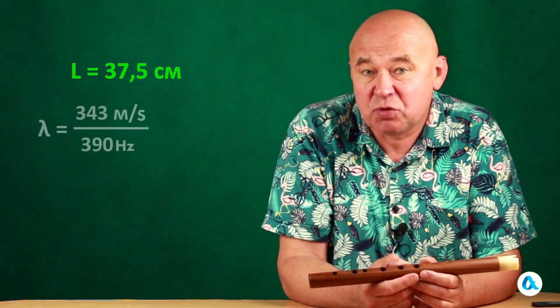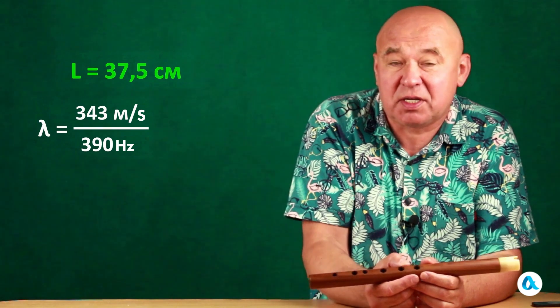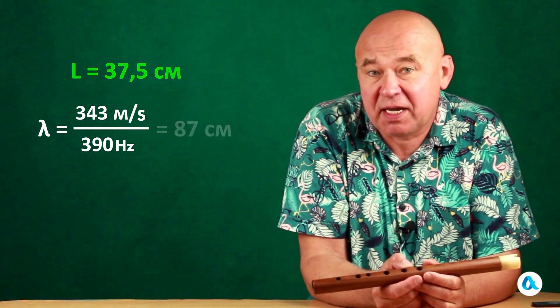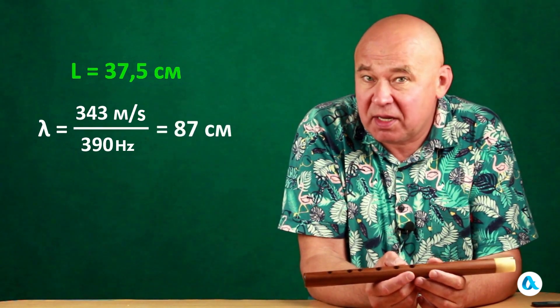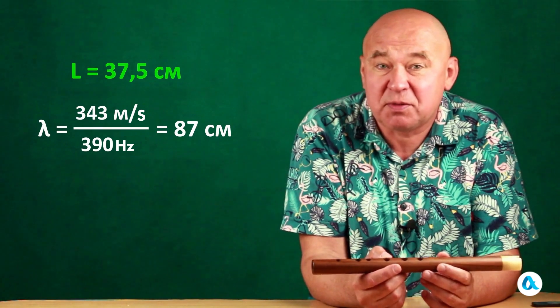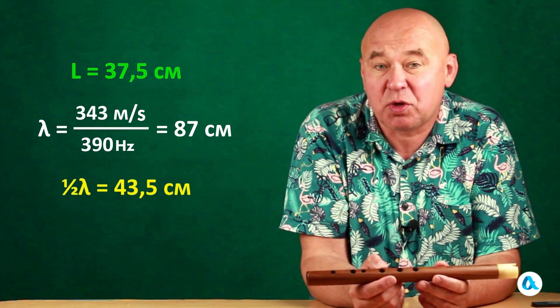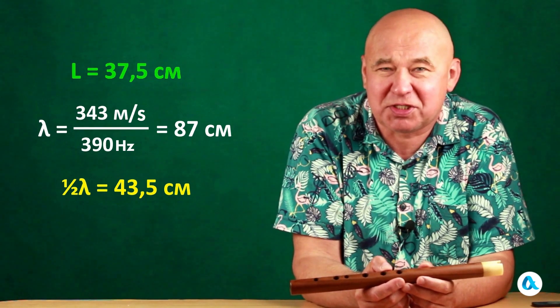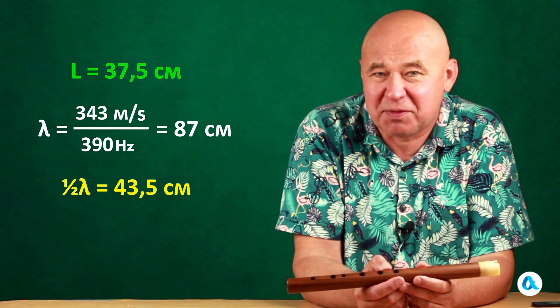Now we need to apply this theoretical model to a real Andean cana flute. The frequency of the fundamental tone was 390 Hz, and the length of this flute is 37.5 cm. Now let's calculate the wavelength: divide 343 m/s by 390 Hz to get an 87 cm wavelength. Half wavelength is 43.5 cm, which is 6 cm more than 37.5 cm.